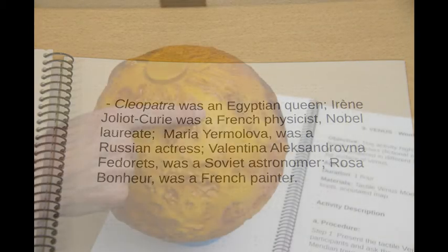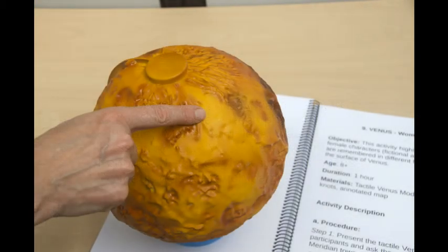For example, Atalanta, a Greek mythological heroine, gives name to a planitia or flat region, located on the opposite side of the North Pole cap, using the meridian as reference.